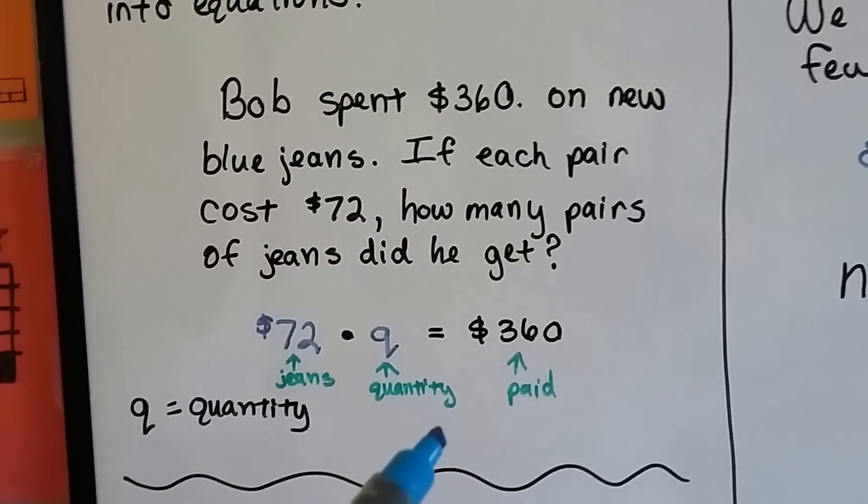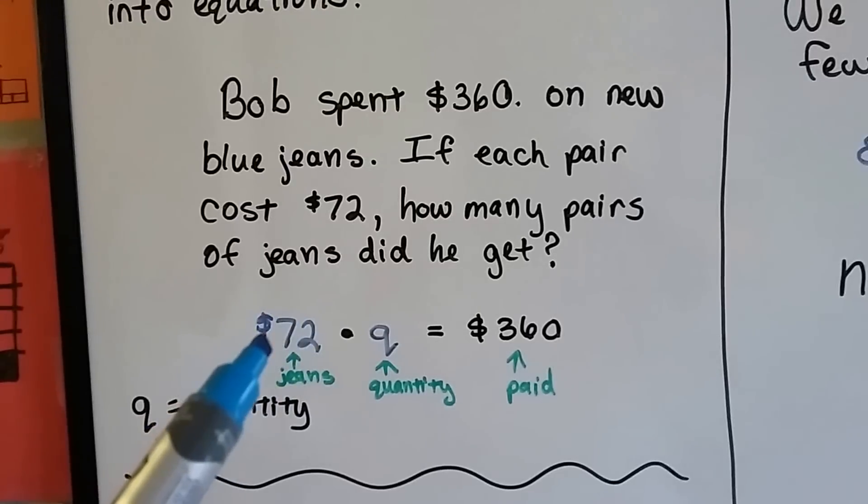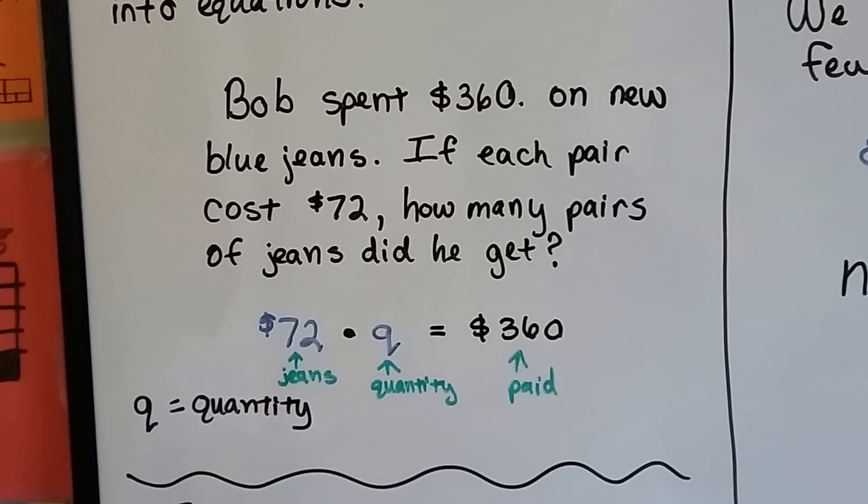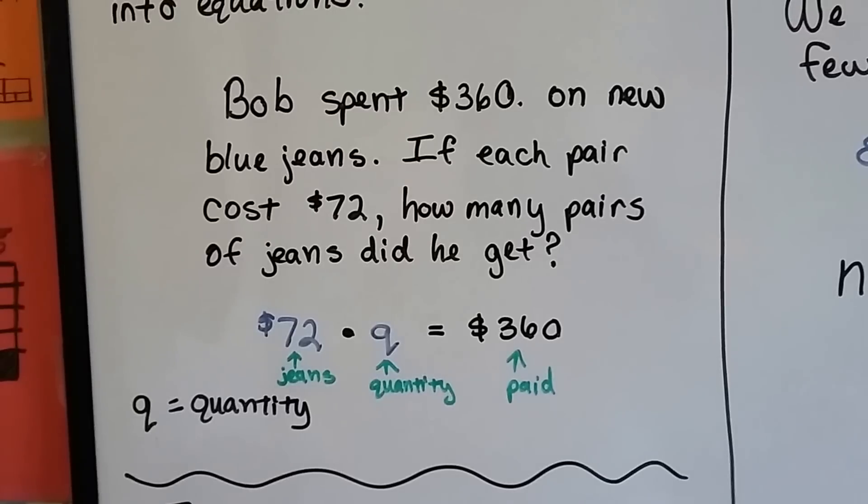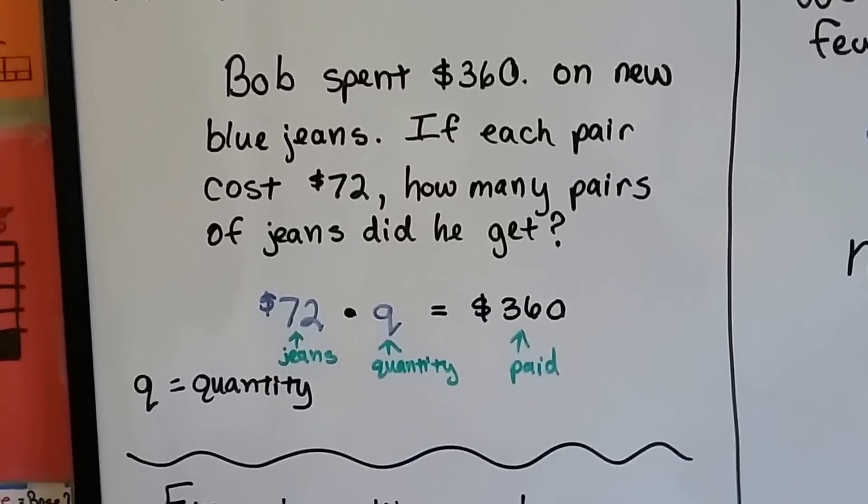Or we could have done a division problem. We could have said 360 divided by 72, and that would tell us the quantity of jeans he bought. We could have done the inverse, so it didn't matter.